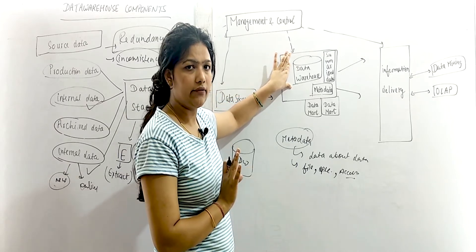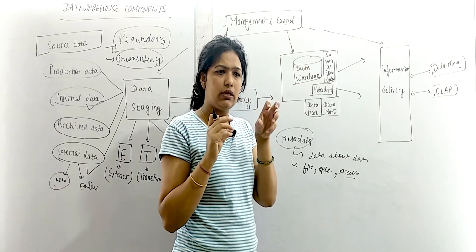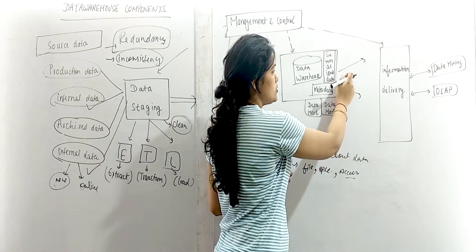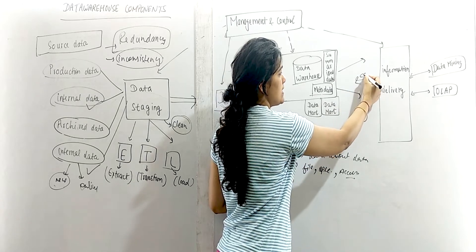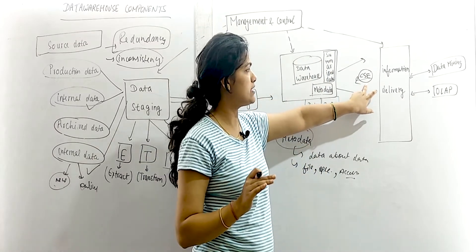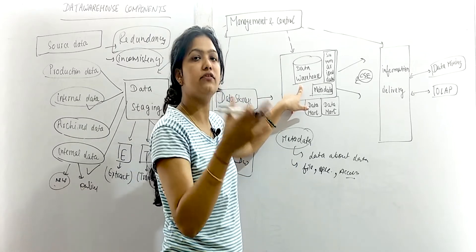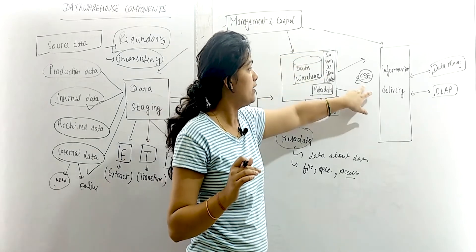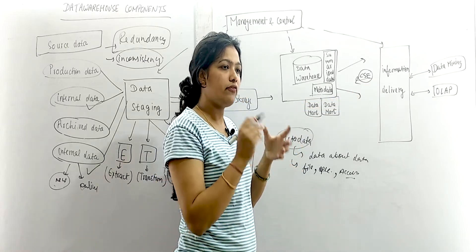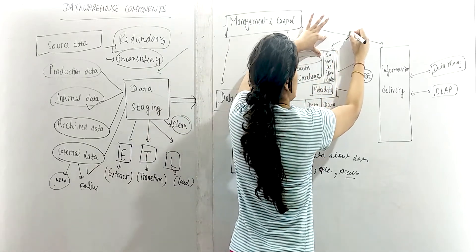Summarized data: in the data warehouse there is detailed data — all the data — but summarized data means you have collected the data in a summarized way using keywords to speed up queries. Suppose someone searches for the CSE department in a data warehouse of all universities. Summarized data will find the keyword 'CSE' and direct the query to that particular location faster. So summarized data is used to speed up queries.